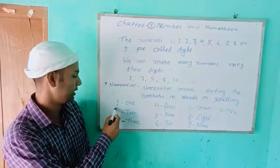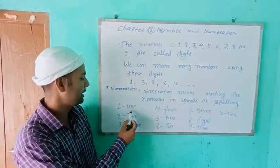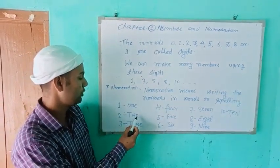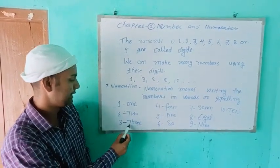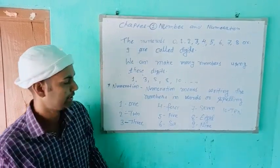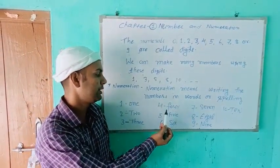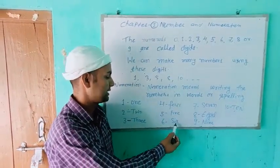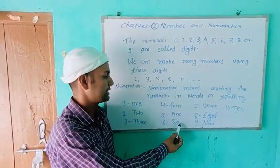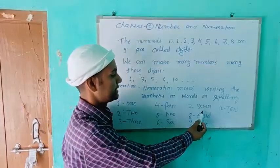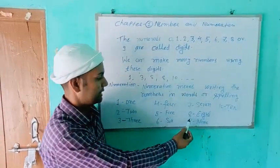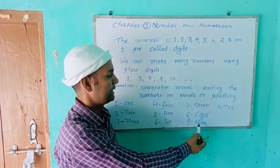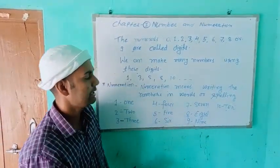Such as 1 — number name is O-N-E. Then 2 — T-W-O. 3 — T-H-R-E-E. 4 — F-O-U-R. 5 — F-I-V-E. 6 — S-I-X. 7 — S-E-V-E-N. 8 — E-I-G-H-T. 9 — N-I-N-E. 10 — T-E-N.